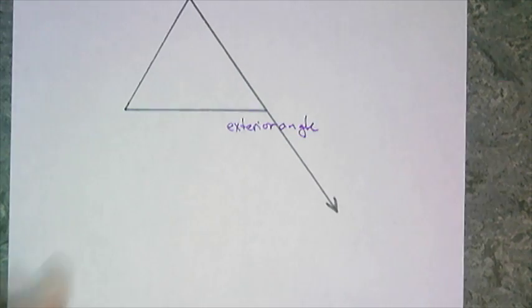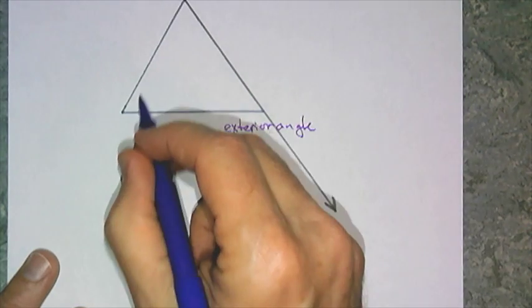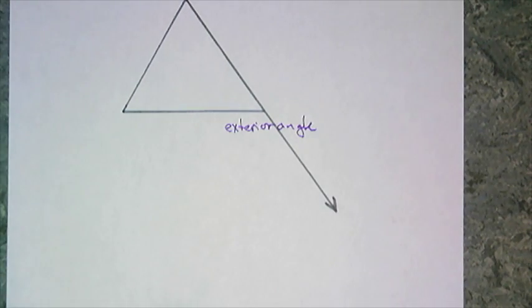You may wonder where they got that name, right? It's on the exterior. And of course, the ones on the inside of the triangle are interior angles.